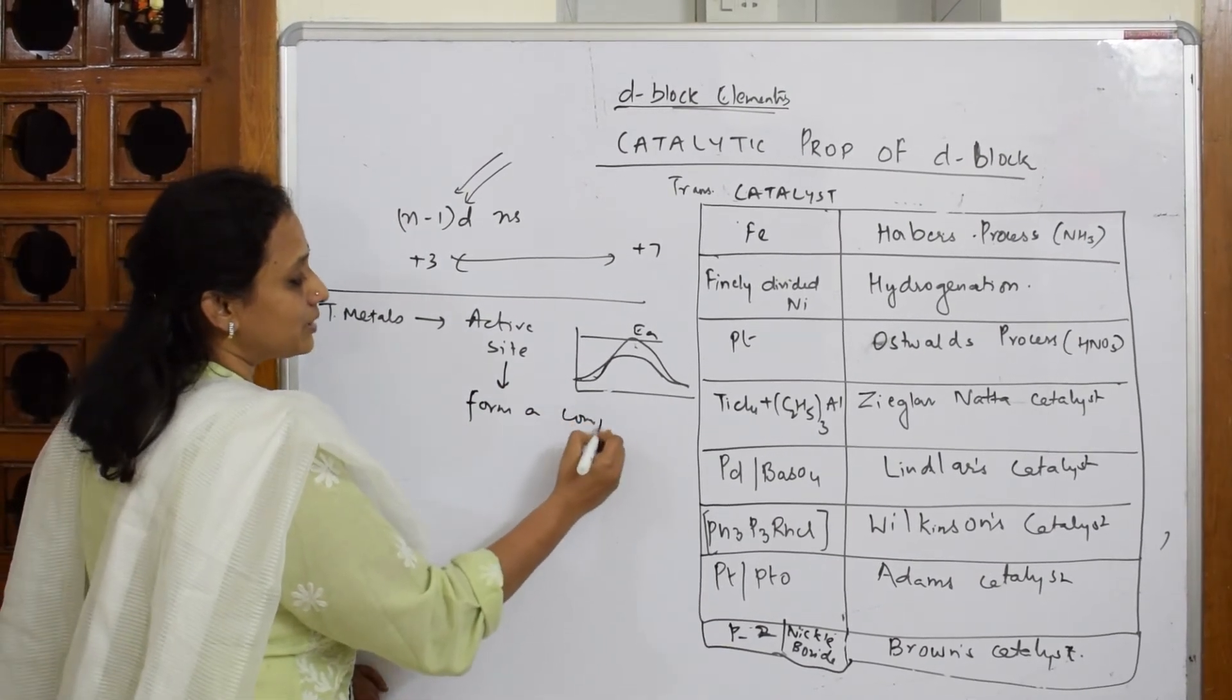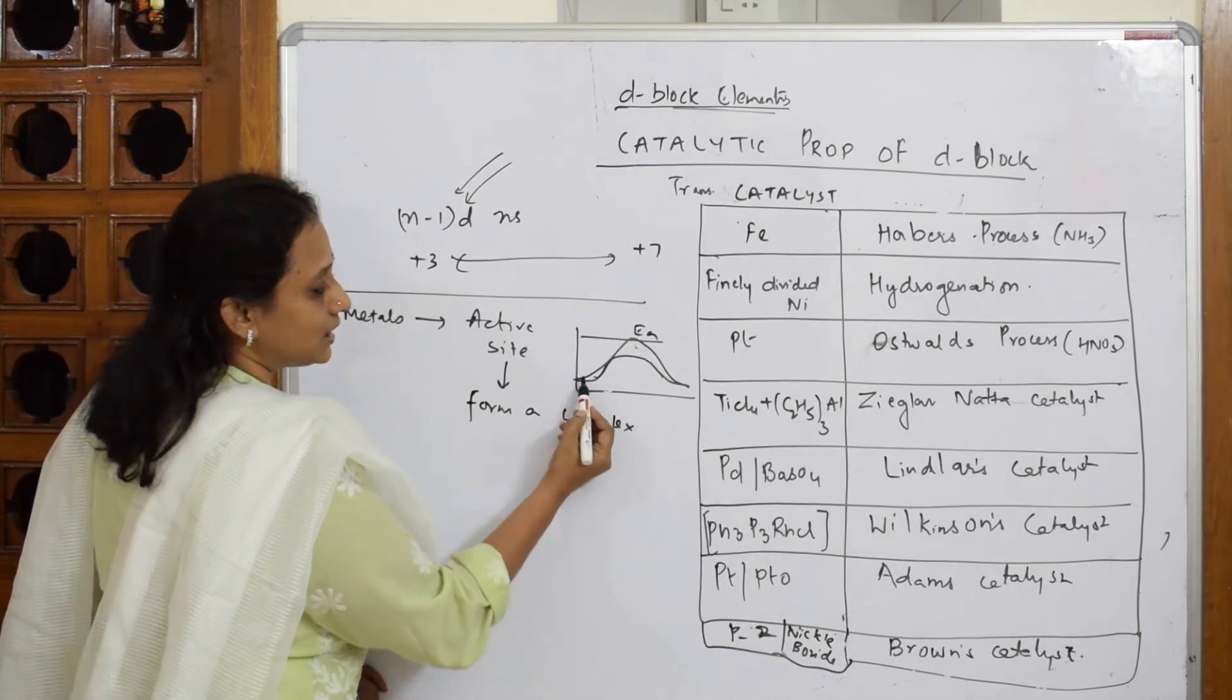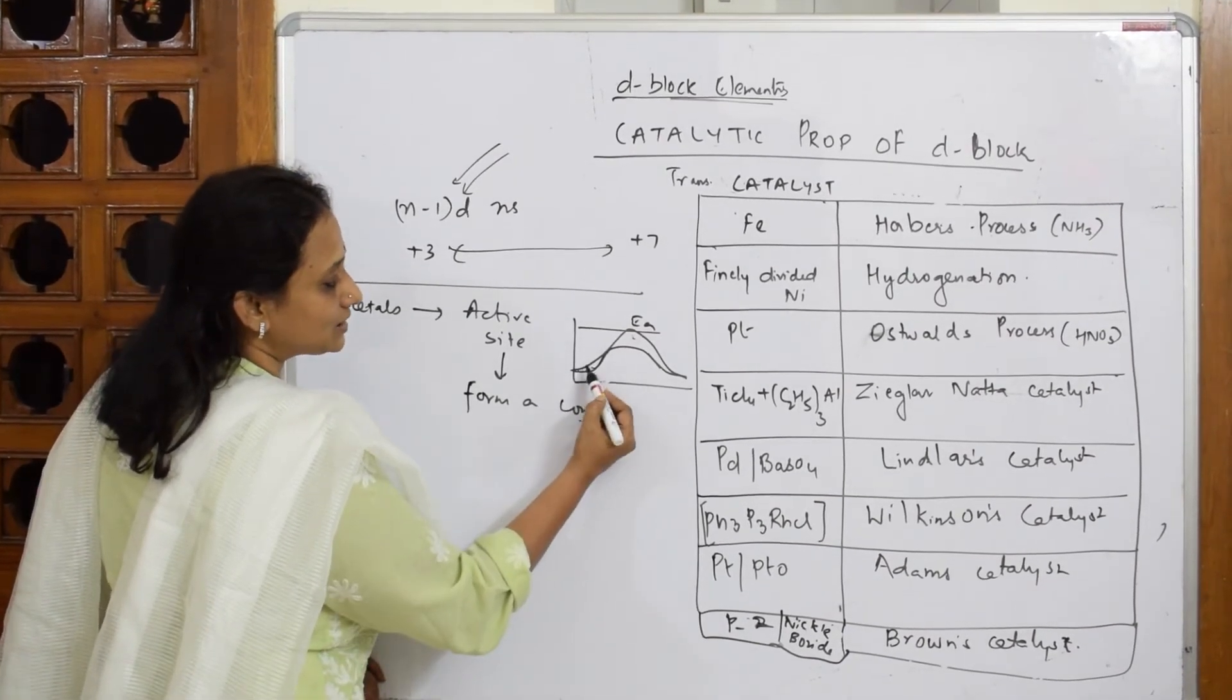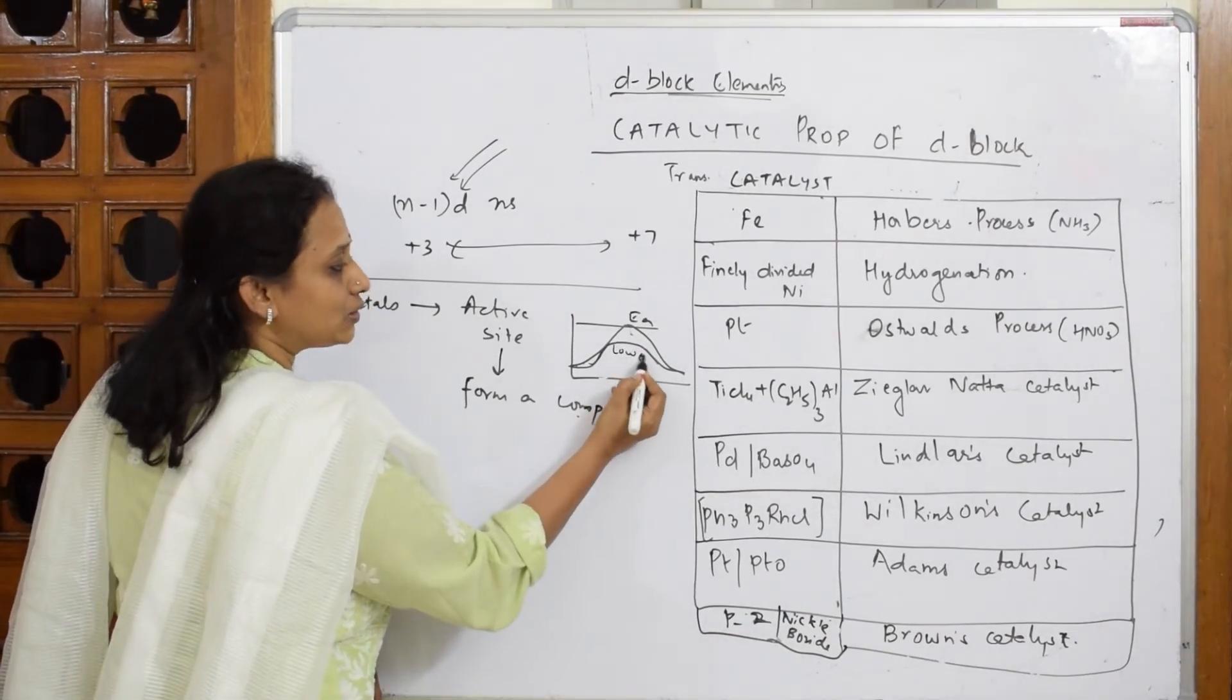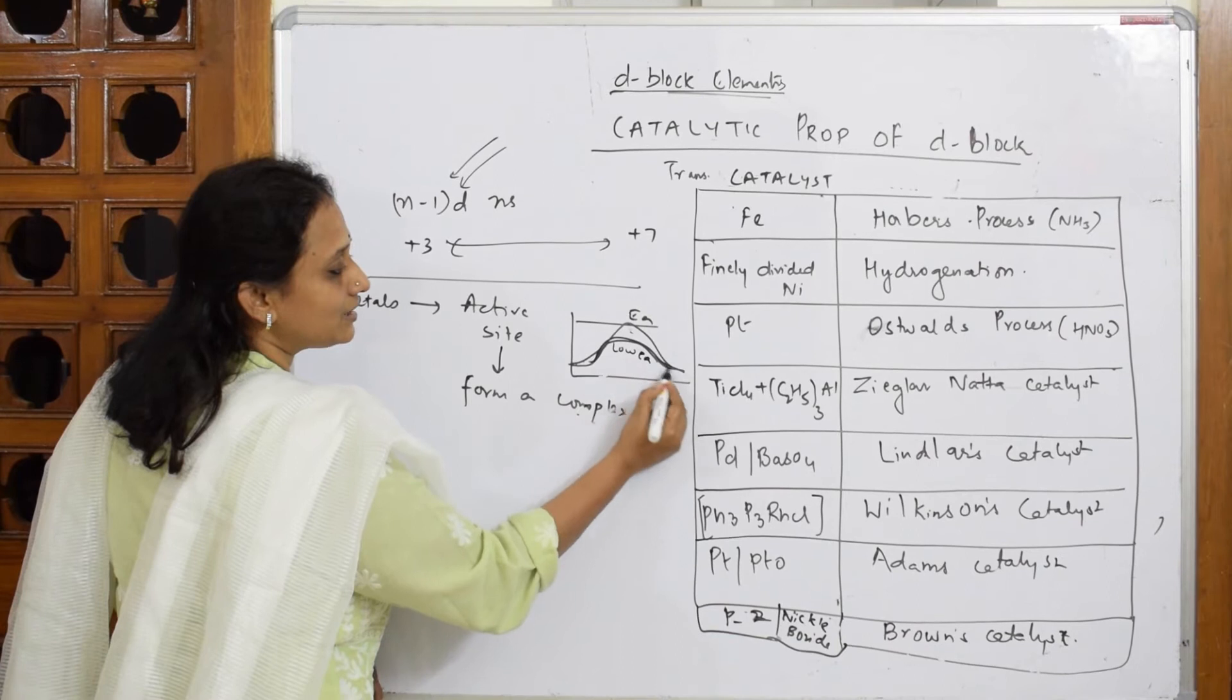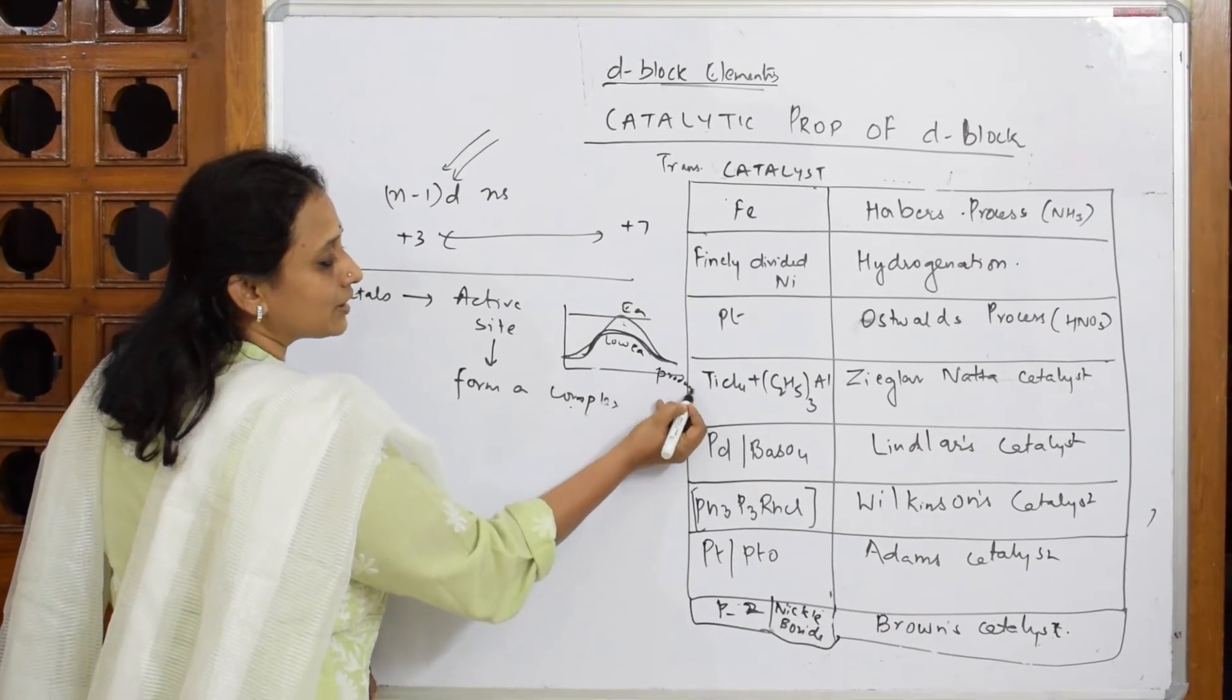After forming the complex, what does it do? Before reaching the activation energy barrier with low Ea only, it's going to cross the energy barrier and form the products.